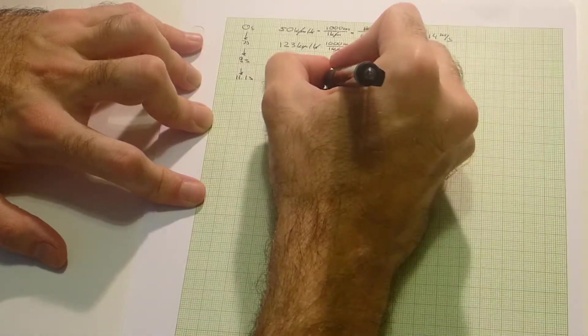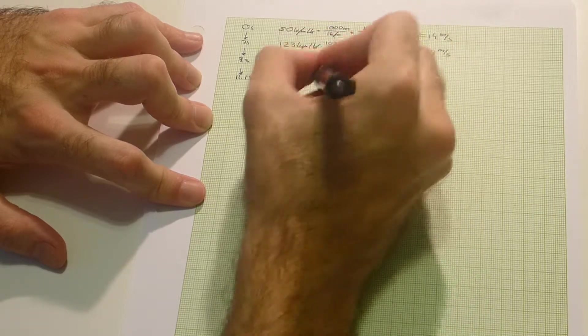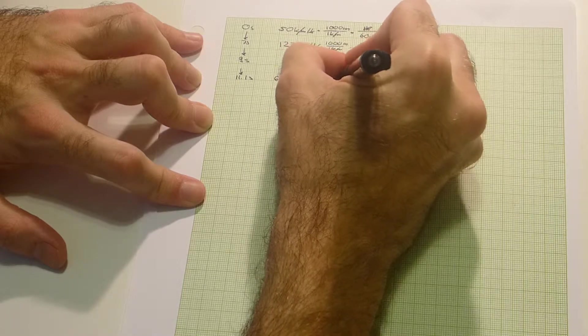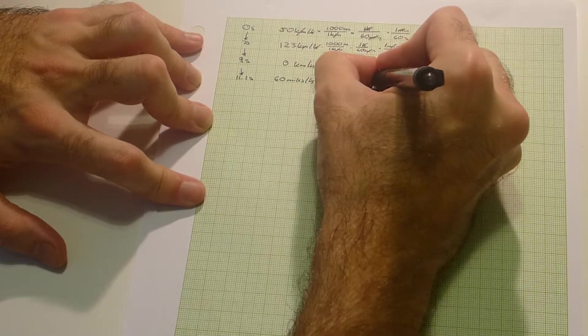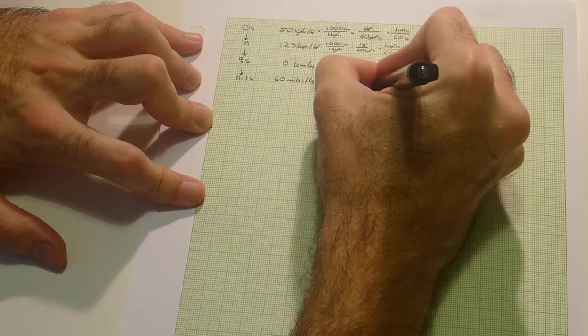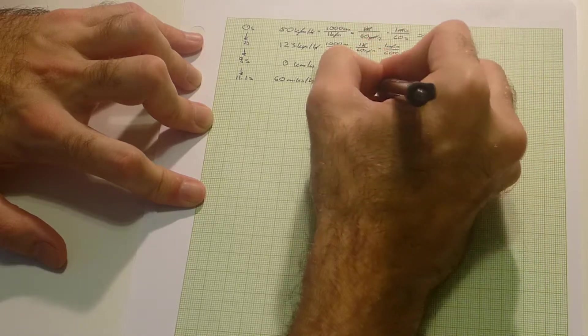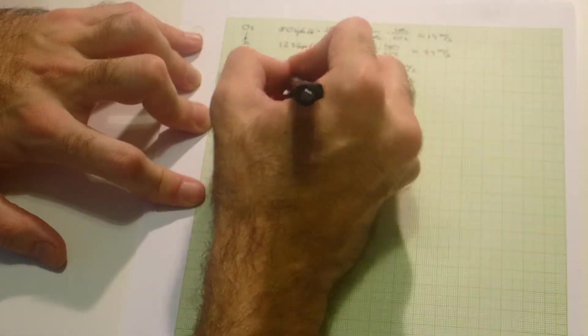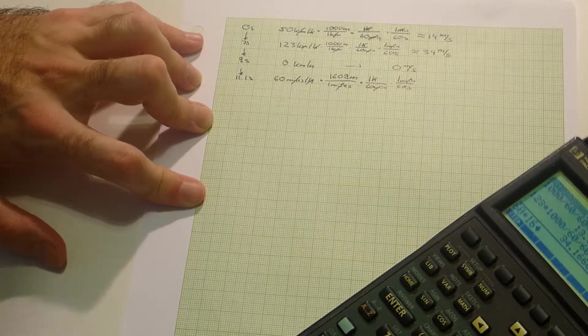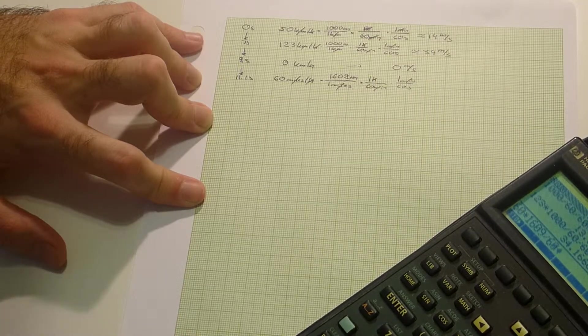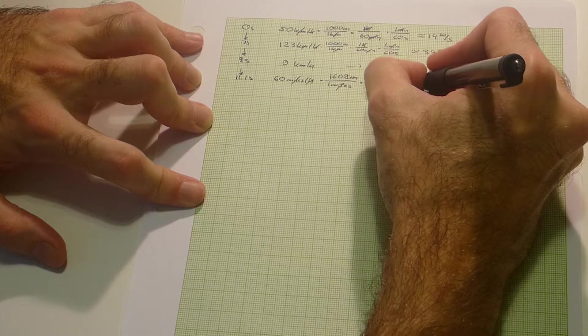60 miles - well again I divide by 1 mile, which is 1609 meters. I multiply again by 1 hour over 60 minutes, times 1 minute over 60 seconds. Hours go away, minutes go away. I end up with meters per second. 60 times 1609 divided by 60 divided by 60 is around 27 meters per second.